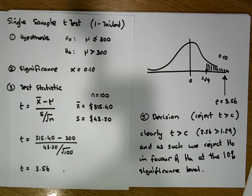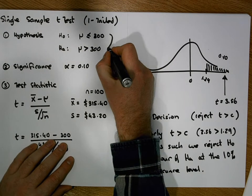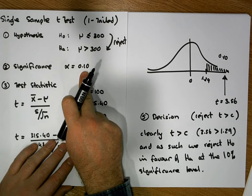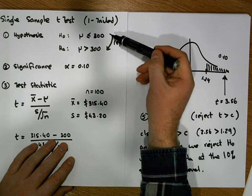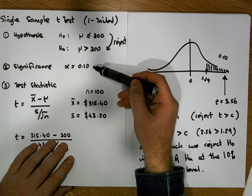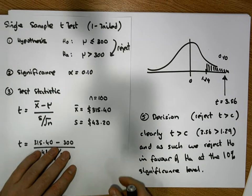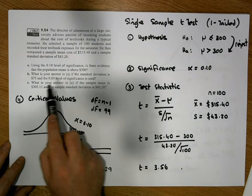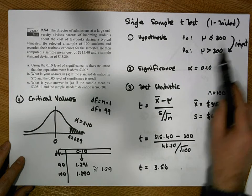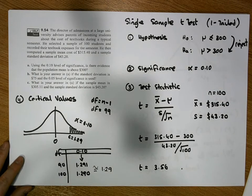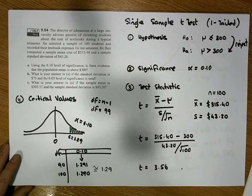Rejecting H0 in favor of Ha at the 10% significance level means we are 90% confident in the decision we made, but we might be wrong 10% of the time. In this context, this means there is evidence to suggest that the population mean cost of textbooks is above $300, because we've moved from the null hypothesis to the alternative hypothesis.